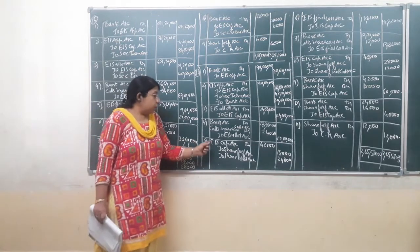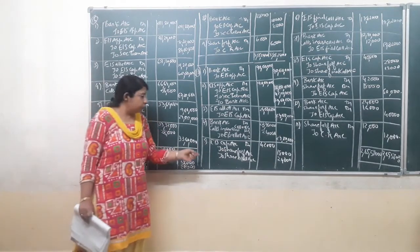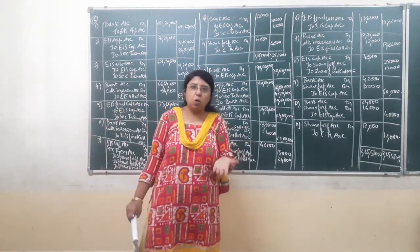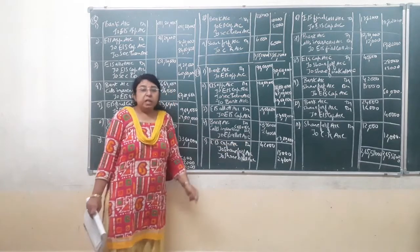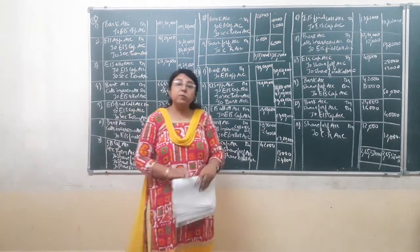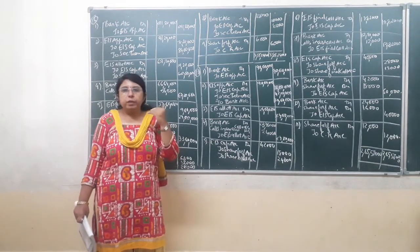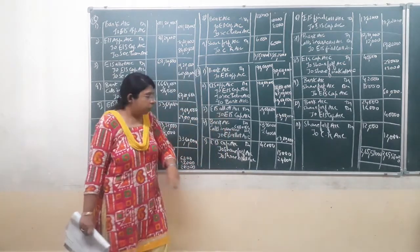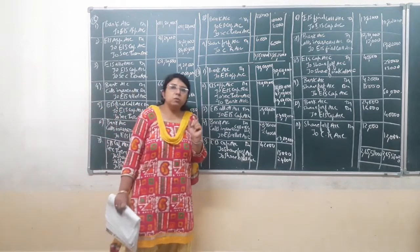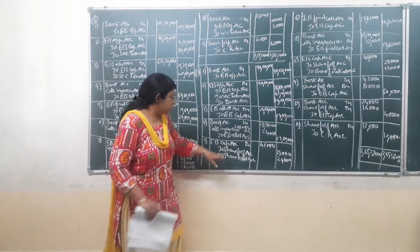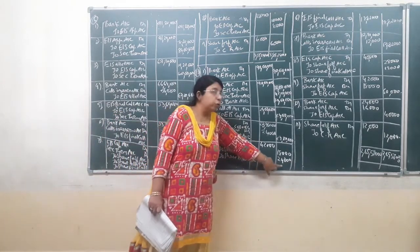Before moving to the next step, we must forfeit the shares of Siddharaj who has not paid the amount due on allotment. As mentioned, his shares were forfeited after allotment and before the final call. The journal entry for forfeiture of Siddharaj's shares: equity share capital account is debited for 6,000 shares multiplied by Rs. 7 per share, because only Rs. 7 per share has been called up so far as the final call of Rs. 3 per share was not yet called. So 6,000 into Rs. 7 comes to Rs. 42,000. The amount paid by Siddharaj — application money of 6,000 into Rs. 3 — is credited to share forfeiture account. The Rs. 4 per share not paid on allotment — 6,000 into Rs. 4 equals Rs. 24,000 — is credited to share allotment account.